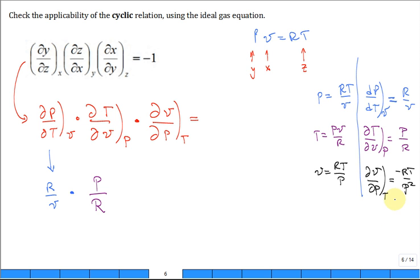Negative RT over P squared. True or false? Do you like that one? Negative RT over P squared. Thumbs up if you do. Good. So we get negative RT over P squared.